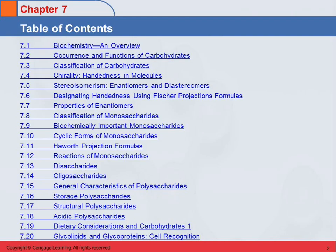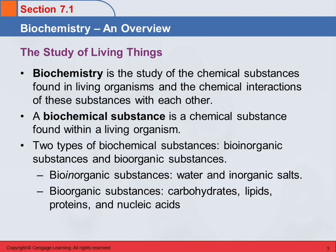It's a word we're familiar with. There's just an awful lot of sections in this chapter. So, let's have a quick overview of biochemistry. Biochemistry is the study of chemical substances found in living organisms — it's the chemistry of biology in a way. We're looking at the chemical substances and also the interactions and reactions that occur in living organisms. A biochemical substance is just a chemical substance found in a living organism, and there are two types of biochemical substances.